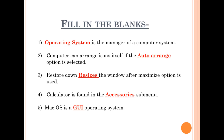Number 4: Calculator is found in the dash submenu. Answer is Accessories. So the sentence will be: Calculator is found in the Accessories submenu. Number 5: Mac OS is a dash operating system. Answer is GUI. So the sentence will be: Mac OS is a GUI operating system.